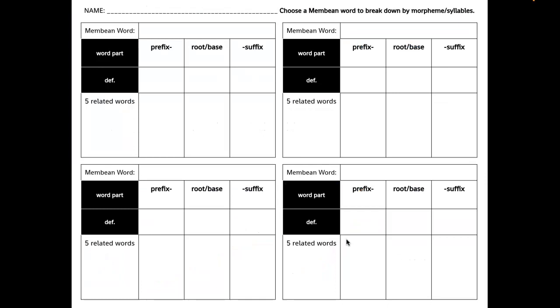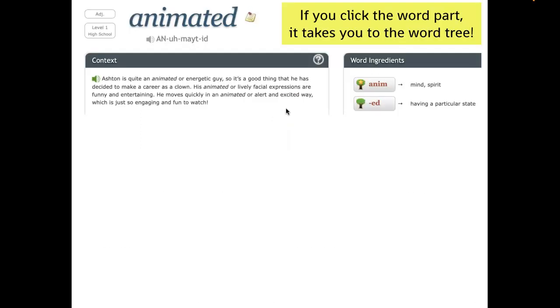So you're going to have this handout on the front. You're going to find four different words, and we're going to do one example together right now, and then you're going to find four more words and do the exact same thing. So the word we're going to use is animated. And again, if you click this little part here, it'll take you to the word tree. You can see that anim is a root. It's not a word by itself, so it's not a base. It's a root, and then I've got a suffix, ed.